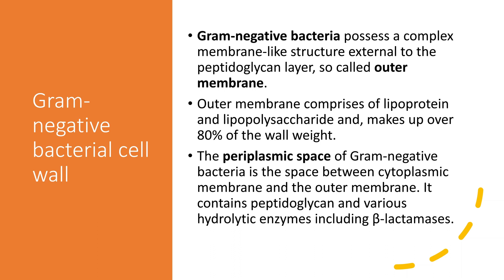In gram negative bacteria, to compensate for the thin peptidoglycan, they have an outer membrane which is external to the peptidoglycan layer. This outer membrane is made of lipoprotein and lipopolysaccharide. The lipoprotein forms the inner layer of the outer membrane, and the lipopolysaccharide is the outer layer of the outer membrane. In fact, 80% of the gram negative bacteria cell wall is made up of this outer membrane.